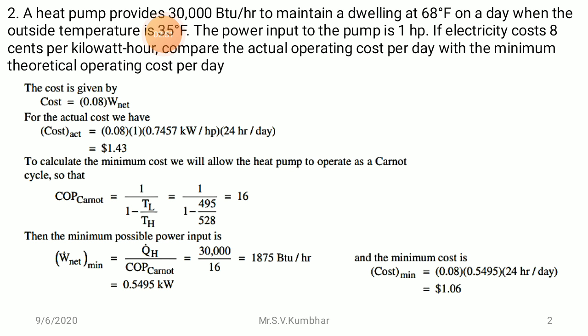For the actual cost: actual cost = 0.08 × W_net. The capacity is 1 hp, converted to kilowatts: 1 hp = 0.745 kW, multiplied by 24 hours per day, which equals 1.43 dollars per day.